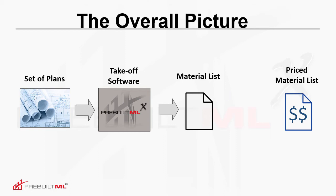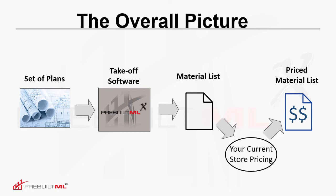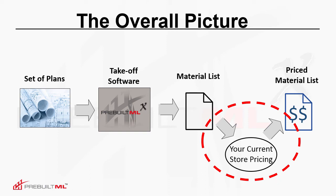Obviously, what needs to happen is, in some fashion, the material list needs to have your current store pricing applied to it. So when we speak of the pricing feature in pre-built ML, it's referring to this area — the transition between the material list to the priced material list.